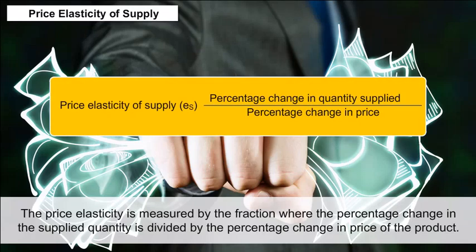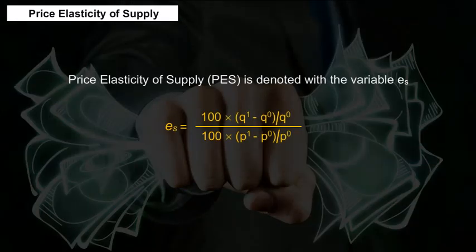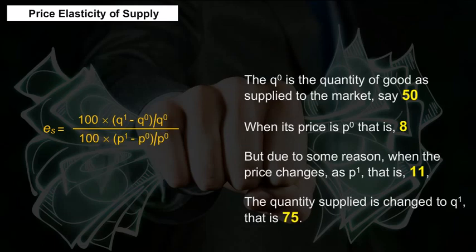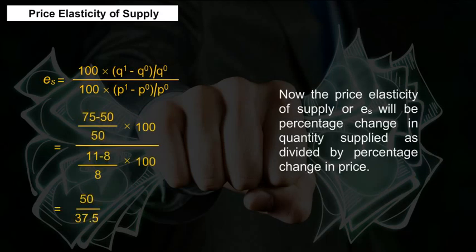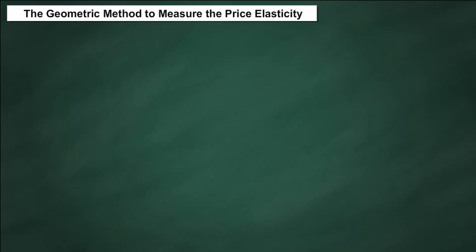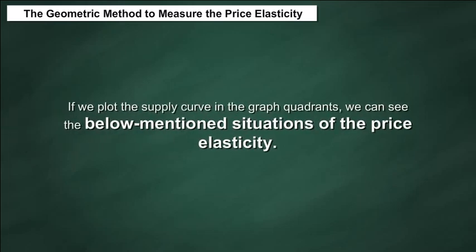Price Elasticity of Supply. The price elasticity of supply is measured as the percentage change in quantity supplied divided by the percentage change in price of the product. PES is denoted by ES. For example, if Q0 is 50 at price P0 of 8, and the price changes to P1 of 11, the quantity supplied changes to Q1 of 75, then ES equals the percentage change in quantity supplied divided by the percentage change in price. The geometric method to measure price elasticity plots the supply curve on graph quadrants to show different situations.